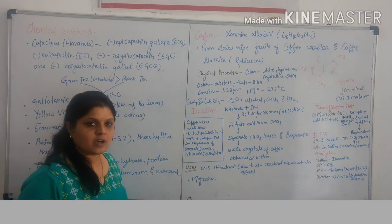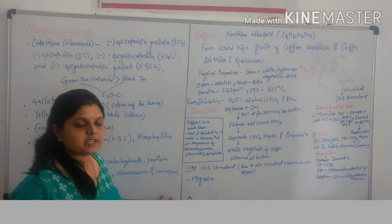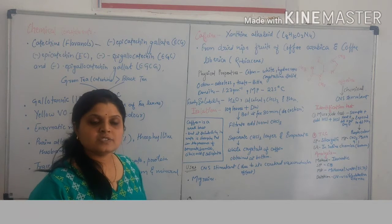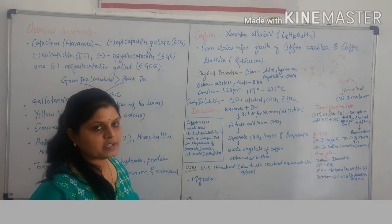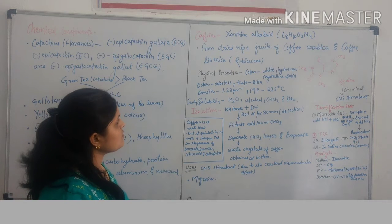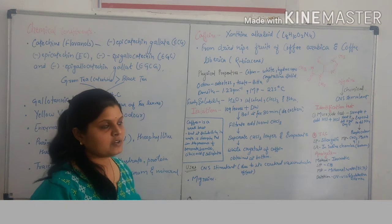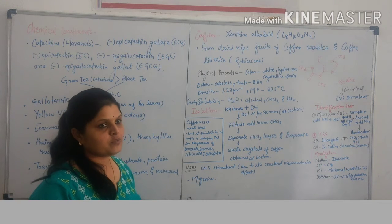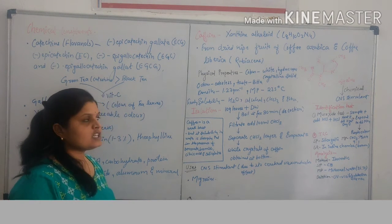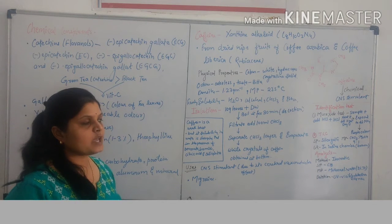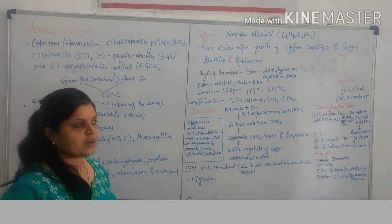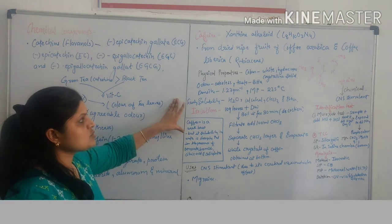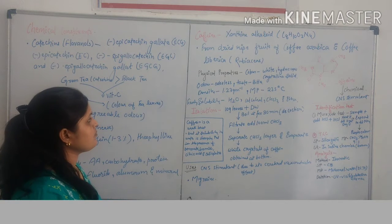We will study caffeine in detail. Caffeine is a xanthine alkaloid or xanthine derivative. Its molecular formula is C8H10O2N4. Caffeine is obtained from dried fruit of Coffea arabica and Coffea liberica, and it belongs to Rubiaceae family.